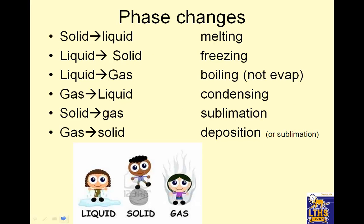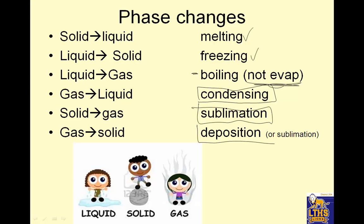Phase changes — you need to know the names. Solid to liquid is melting. Liquid to solid is freezing. Liquid to gas — don't say evaporation; when we're forcing it, we want boiling. Gas to liquid is condensing. Solid to gas is sublimation — that one's new. And gas to solid is deposition. You need to know the names of those phase changes.